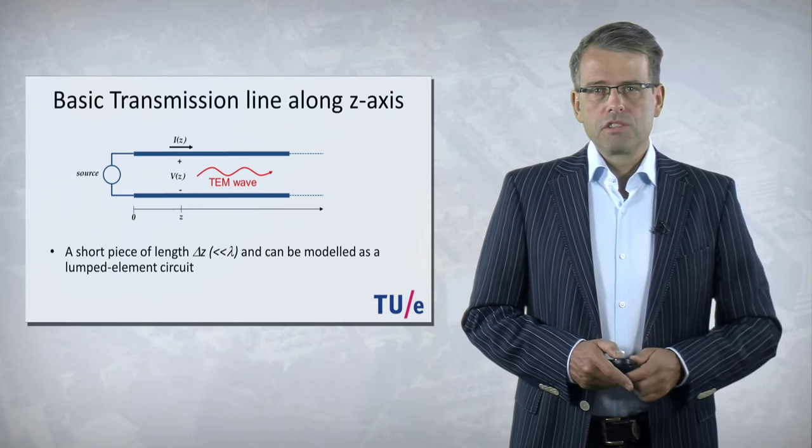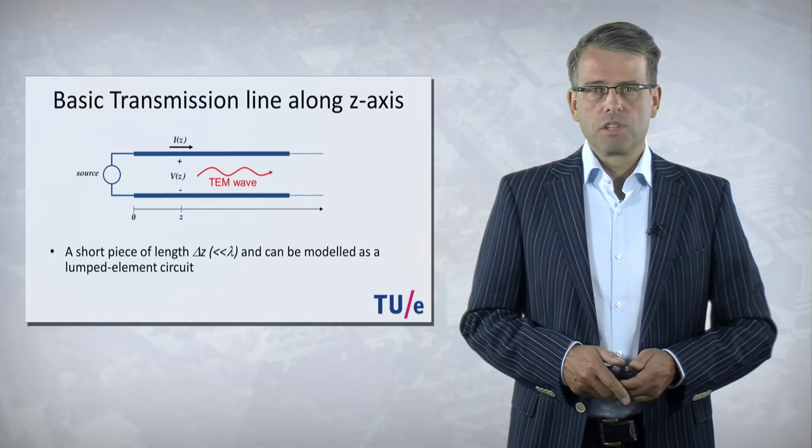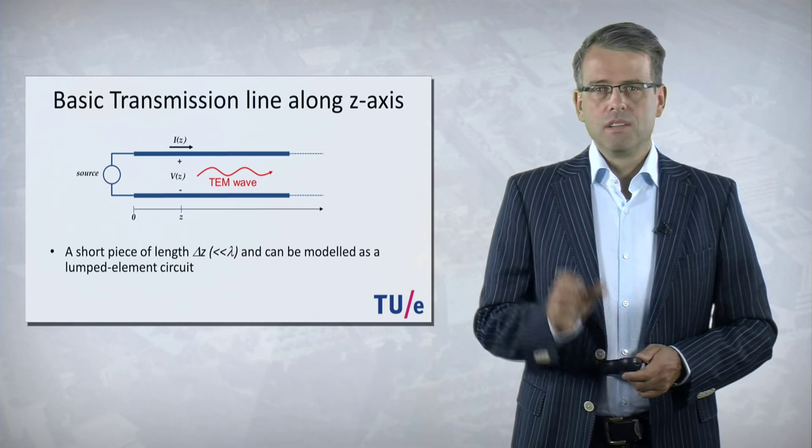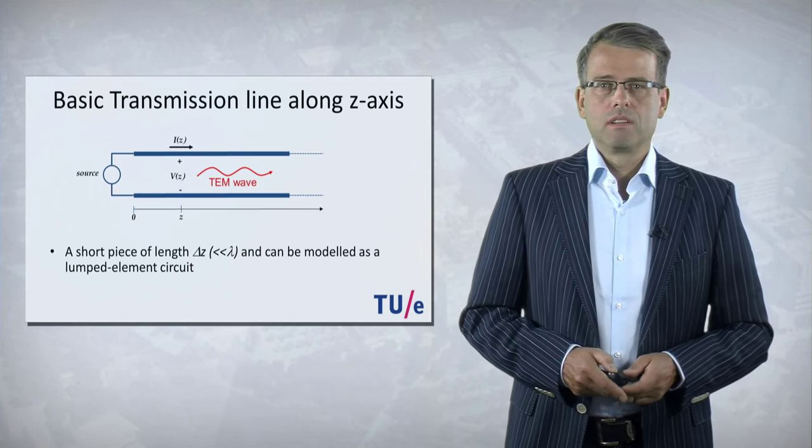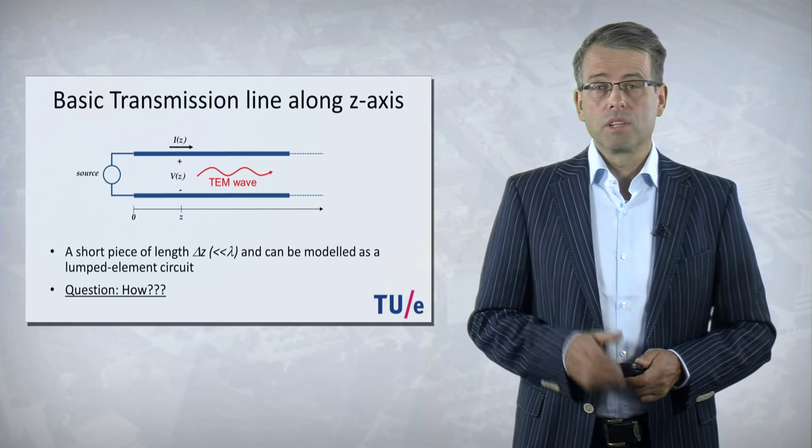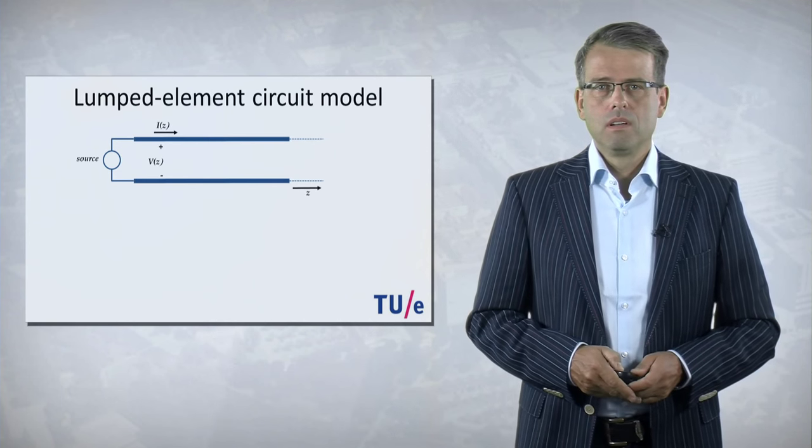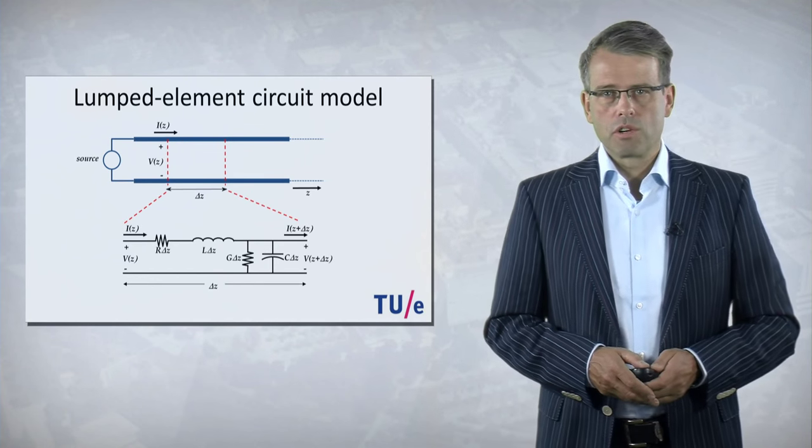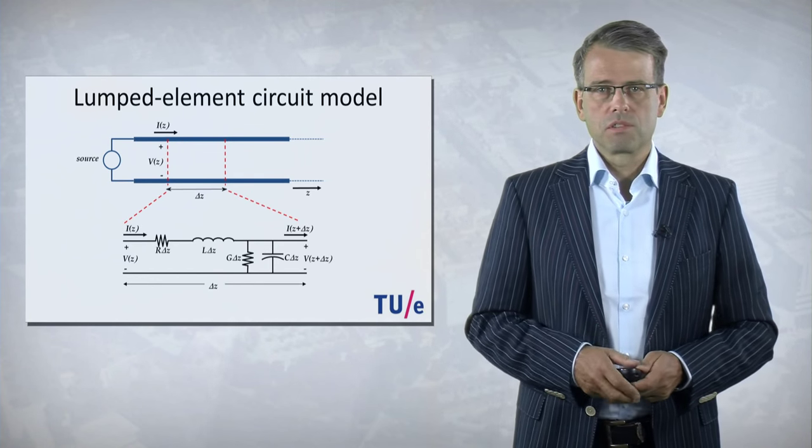The trick is to consider first a small piece of transmission line with the length of delta z. And delta z needs to be much smaller than the wavelength. This piece of transmission line we can model by Kirchhoff. First we have to define an equivalent circuit that models this short piece of transmission line.